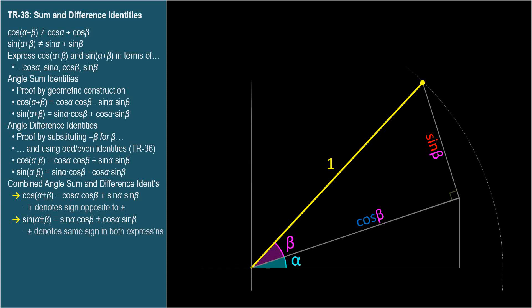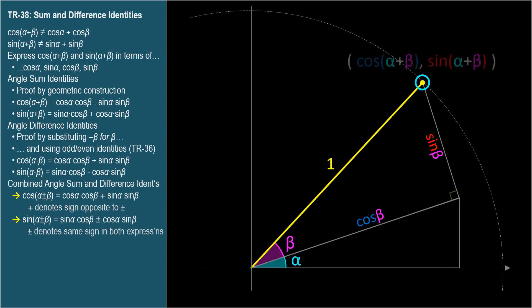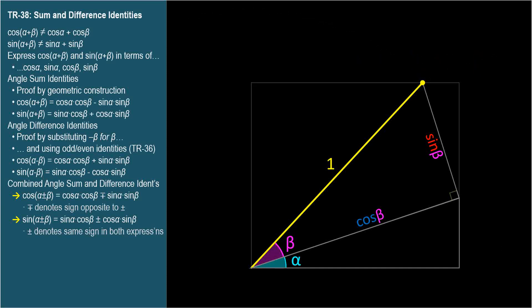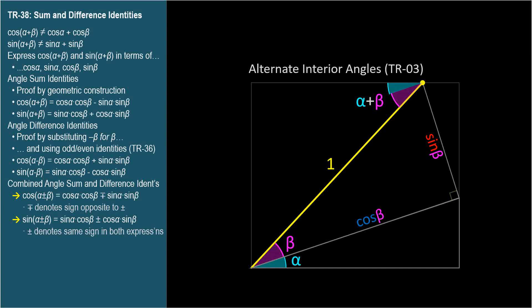Now we have an angle alpha plus beta in standard position, and the length of the terminal side is 1, so the endpoint of the terminal side of alpha plus beta has coordinates cosine(alpha plus beta), sine(alpha plus beta). These coordinates are the two expressions we want to solve for. To proceed with this geometric construction, we'll draw a rectangle all the way around the two triangles. We start by observing that this angle at the top is congruent to alpha plus beta because they're alternate interior angles — see video TR-03 for a recap — so this side opposite alpha plus beta is sine(alpha plus beta).